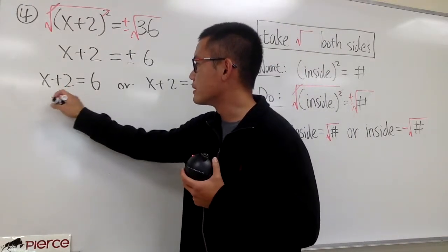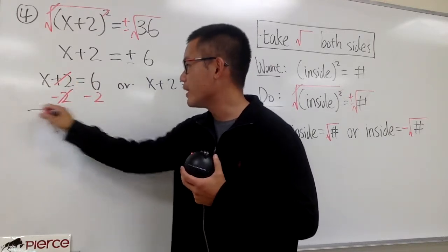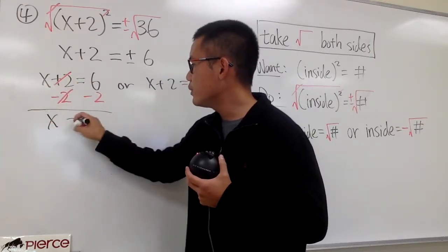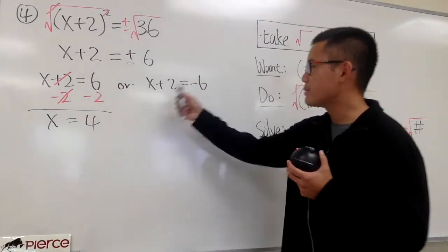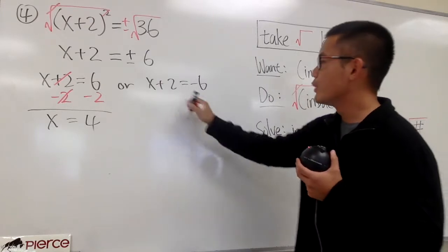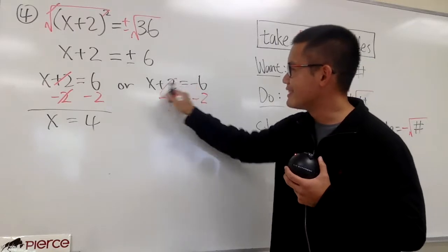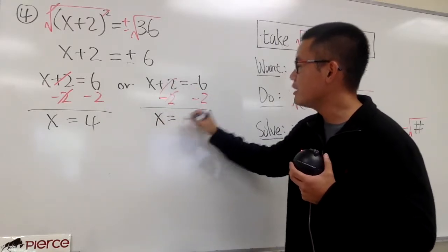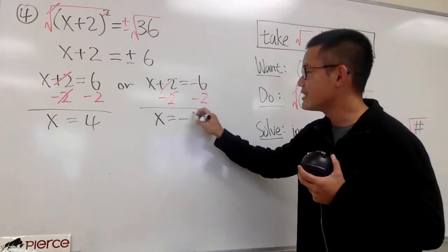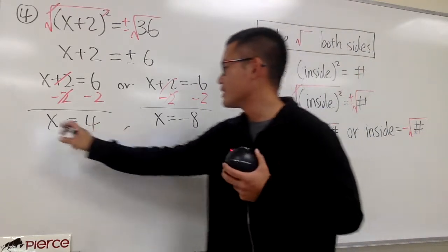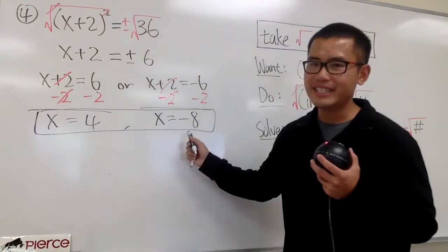Right here, we can just subtract 2 on both sides so that we can get x by itself. We get x equals 6 minus 2, which is 4. And for the other one, x plus 2 is equal to negative 6 — we do exactly the same thing. Minus 2 on both sides, this and that will cancel, and x will be negative 6 minus 2, which gives us negative 8. So we end up with two answers: 4 and negative 8.